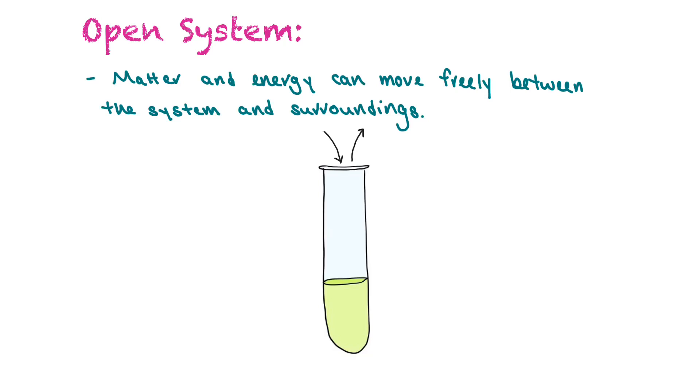You can have open systems or closed systems. An open system is when matter and energy can move freely between the system and the surrounding. It's not closed off. Matter can enter and leave, and energy can enter and leave.